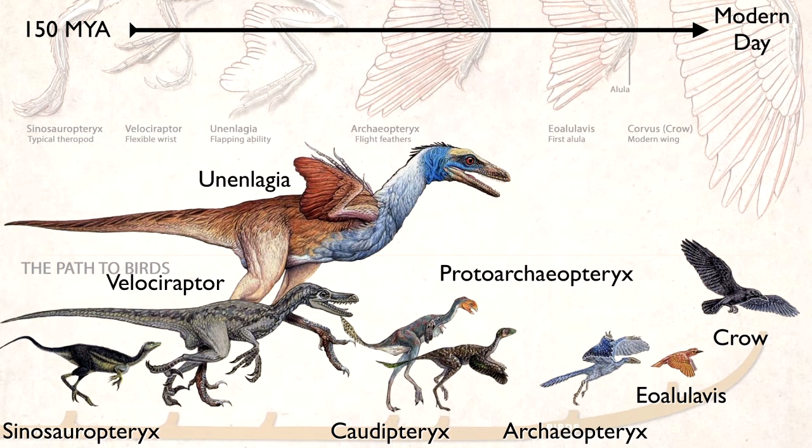Archaeopteryx — fully bird. But it had teeth and it had claws on its wings. That means it was a bird that had teeth and claws on its wings. Big deal. There are birds today that have claws on their wings. One is in South America called a Watsine, and it is born with claws on its wings.